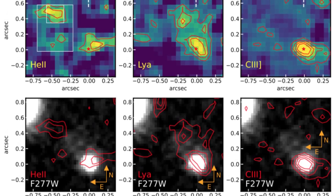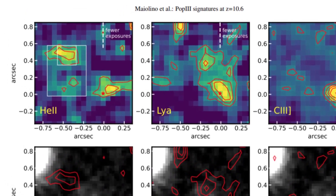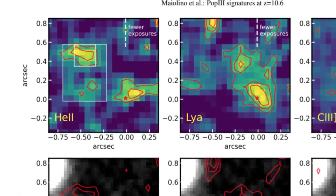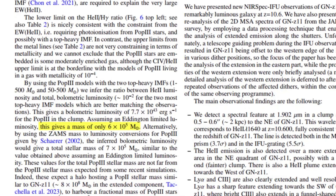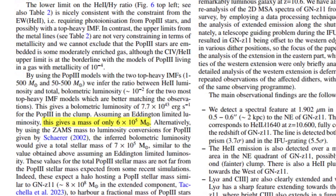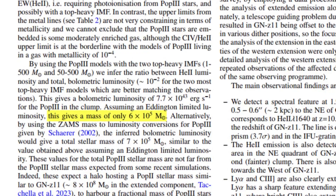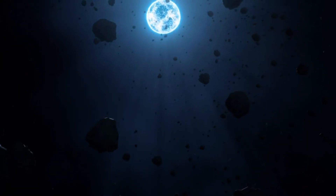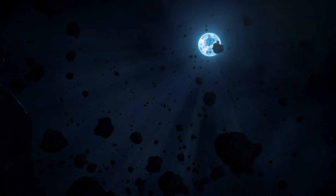This marks the first evidence for Population 3 stars. Although not visible in JWST's infrared light images due to their scarcity, Maiolino and collaborators estimate their total mass in the halo to be approximately 600,000 times that of the Sun. Given that Population 3 stars are typically 500 to 600 times the mass of the Sun, this suggests the presence of around 1,000 such stars responsible for ionizing the helium.